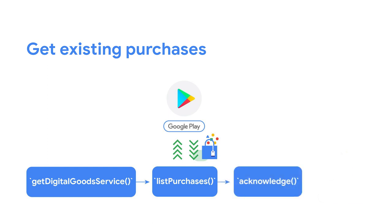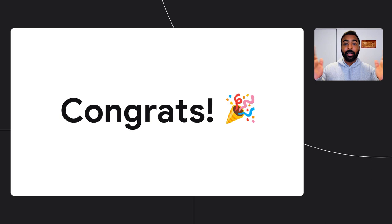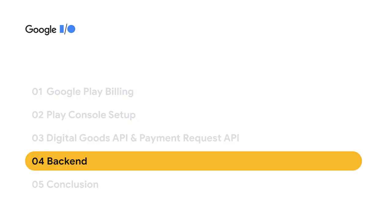At long last, you're now able to display the items your user has purchased and currently owns. Congratulations! You've just completed the whole purchase flow, from getting product details to acknowledging a purchase. Joyce will now go over a few things you need to keep an eye on while building out your backend.